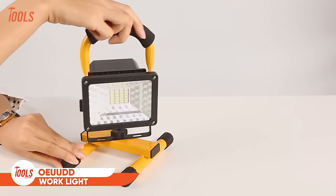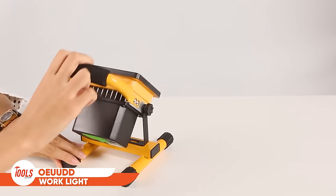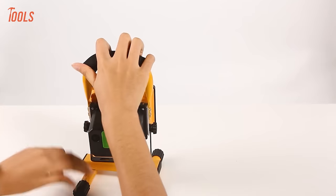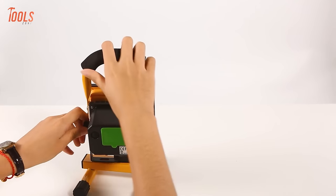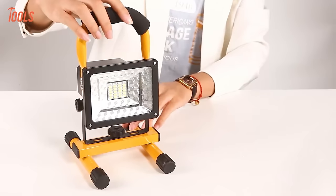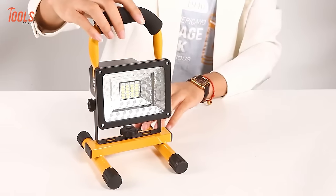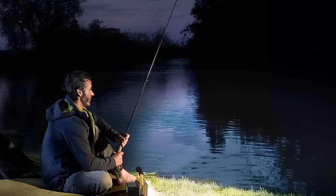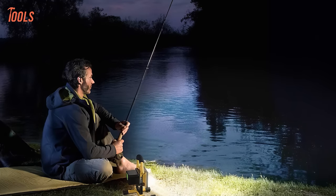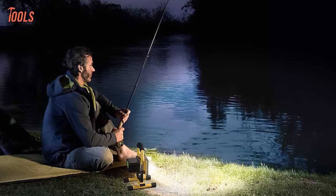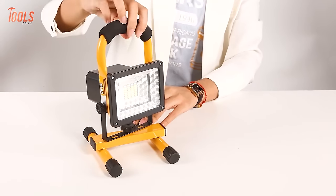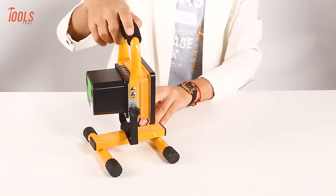Many worksites lack permanent lighting, and a portable work light can be easily moved around to illuminate different areas as needed. So, here comes the OUDD work light. It produces an exceptionally bright 4,000 lumens of LED light, yet is very energy efficient. With three dimming modes, you can adjust the lighting as needed. The waterproof design allows using the light anywhere, even outdoors.